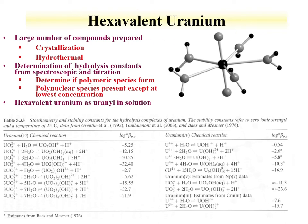Uranium-6—hexavalent uranium—is the most common uranium oxidation state in solution, and from solution species a large number of compounds have been prepared by crystallization or hydrothermal methods. The main species of uranium-6 in solution is the uranyl UO₂²⁺. In the uranyl ion, the axial coordination is dominated by the yl oxygens, which arise from F-electron interactions, while the equatorial plane is where ligand interactions—such as water coordination—occur.